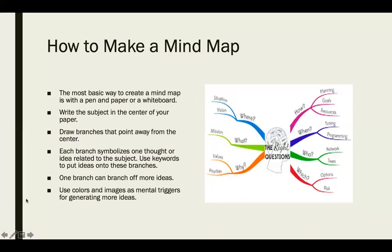The next question is how to make a mind map. So the most basic way to create a mind map is with a pen and paper on a whiteboard. Write the subject in the center of the paper as you can see in this picture. You just write your topic on the question side. Write the subject in the center of your paper and then draw branches that point away from the center. Each branch symbolizes one thought or idea related to the subject and you're going to use keywords to put into ideas onto these branches.